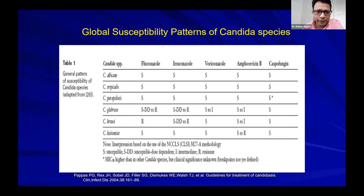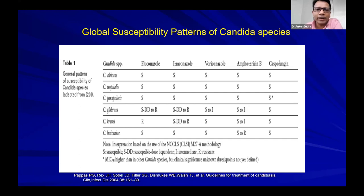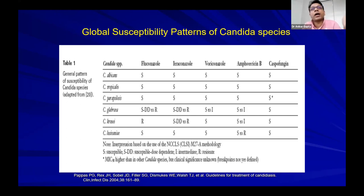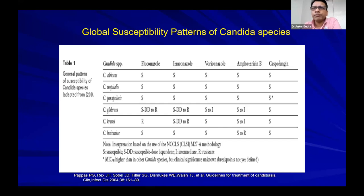Candida glabrata and krusei are 'troubled waters' — ideally, no azole should be used, and the drug of choice is echinocandins. Candida auris, not shown on most slides, is a very sinister pathogen resistant to almost everything — sometimes even echinocandins and amphotericin B. The general rule: always ask your microbiologist for your own hospital's susceptibility data, as patterns vary even between neighboring hospitals.